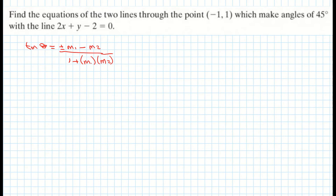We need some information: we need theta, we need m1, and we need m2. We know our angle is 45 degrees and we're only given one of the lines — the line 2x plus y minus 2 equals zero.